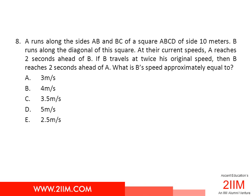Let's read this question. A runs along sides AB and BC of a square ABCD of side 10 meters.